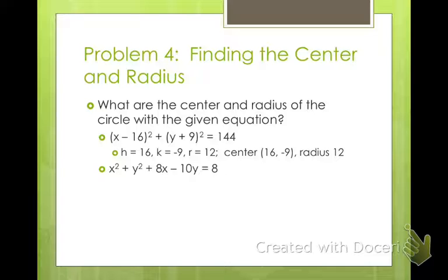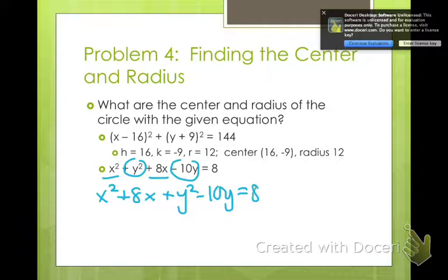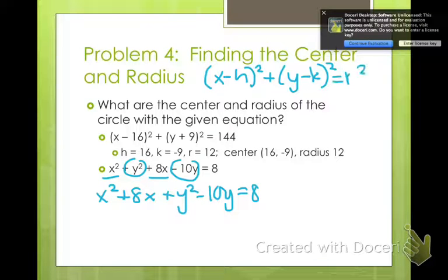For this one, you have to put a little bit of brain power in. We want to complete the square. What we need to do is group together our x's and then group together our y's. So x² + 8x + y² - 10y = 8. Now we need to get it into this form: (x - h)² + (y - k)² = r². But we don't have perfect square trinomials. So we need to create them by completing the square.